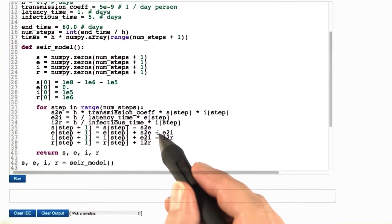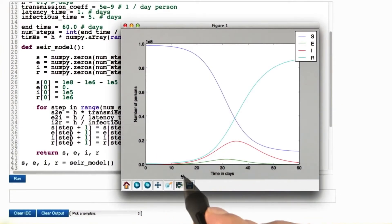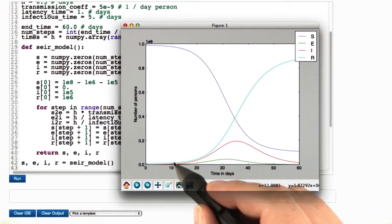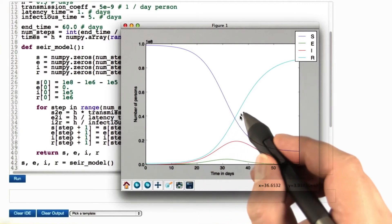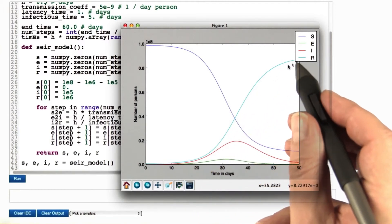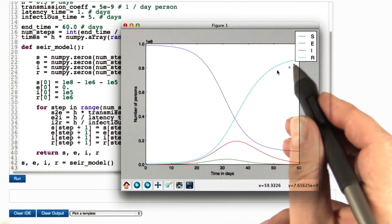So up to very tiny round-off errors, the total number is conserved. In the result, you see that the infection takes quite some time to evolve. The maximum of the exposed compartment comes first, and then comes the maximum of the infectious compartment. And as we go, you see that the number of susceptible persons shrinks drastically, and the number of recovered persons grows by the same amount.